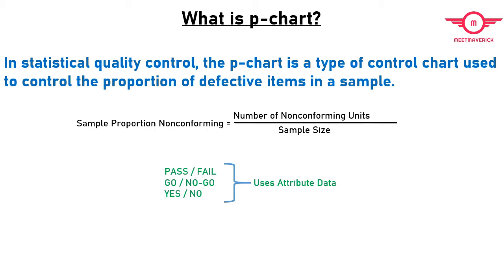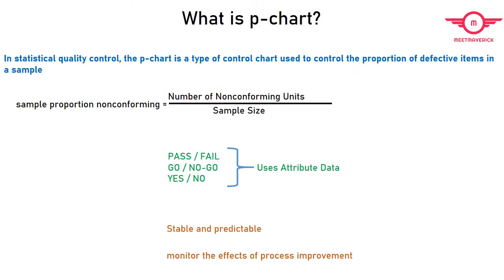For example, use a p-chart to plot the production of incomplete assemblies received weekly. The subgroup would vary depending upon the total number of defectives each week. P-charts are used to determine if the process is stable and predictable, as well as to monitor the effect of process improvement theories.